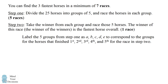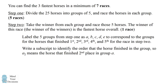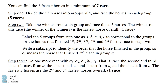Label the five groups from step one as A, B, C, D, and E, to correspond to the groups of horses that finished in first, second, third, fourth, and fifth place in the winners' race in step two. Furthermore, write a subscript to identify the order a horse finished within its group. So A2 means the horse that finished second place in group A. The final race is with A2, A3, B1, B2, and C1.